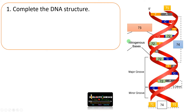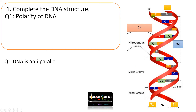A structure is given and we need to complete the DNA structure. The first question is the polarity of the DNA. One end is given as 5 prime, so we need to find out the polarity of the other ends. As we know, DNA is anti-parallel. If one end is 5 prime then the other end will be 3 prime, and both strands are anti-parallel and run in opposite directions. Therefore, with the knowledge of one end's polarity, we can write down all the other three ends.